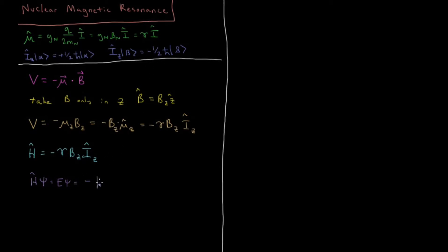Including all our factors, the energy eigenvalue is going to be minus H-bar times gamma times m_I — which is either plus one-half or minus one-half — times B_Z times psi. So our energy eigenvalue is minus H-bar gamma B_Z times plus or minus one-half, depending on whether we are in the alpha or the beta state.